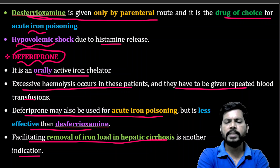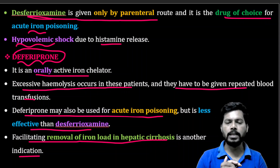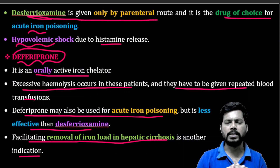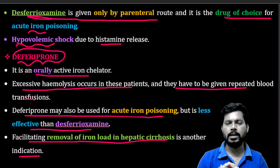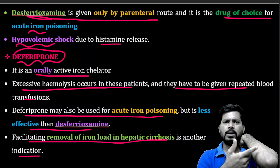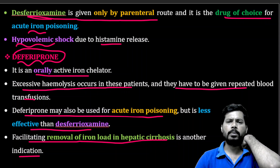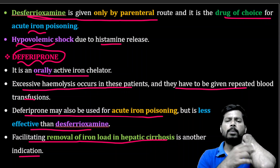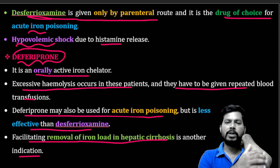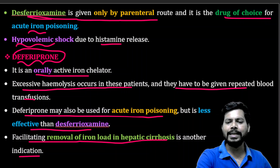Hepatic cirrhosis is the formation of scars in the liver. When the liver is severely damaged, fibrotic scar tissue forms and the tissue becomes hard — similar to scar formation after a skin injury.